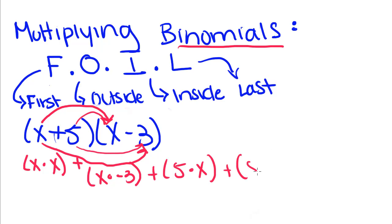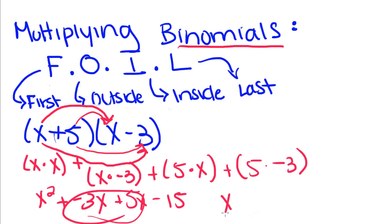So plus 5 times negative 3. And then we multiply each one in the parentheses, and then we'll combine our like terms. So x squared plus x times negative 3, negative 3x, plus 5x, minus 15. We can combine these middle terms, x squared plus 2x, minus 15.